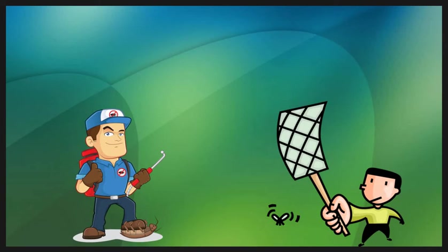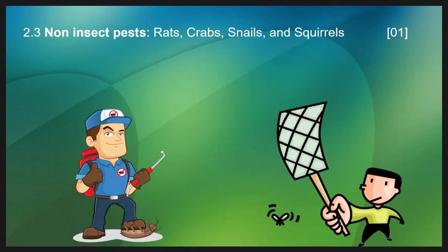In addition to insects, there are other animals that harm agriculture and reduce agricultural yield. In Topic 2.3, we will study the non-insect pests such as rat, crabs, snail, and squirrels.